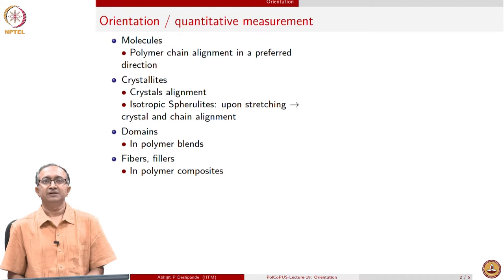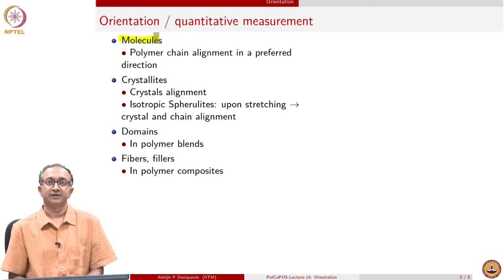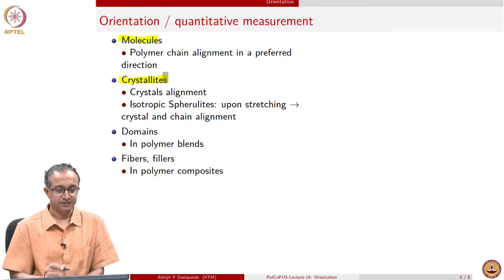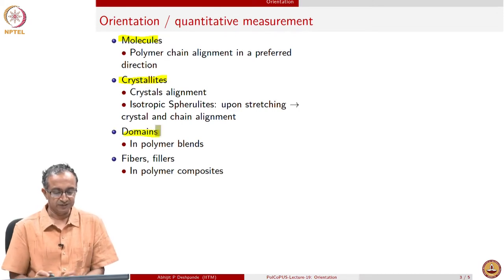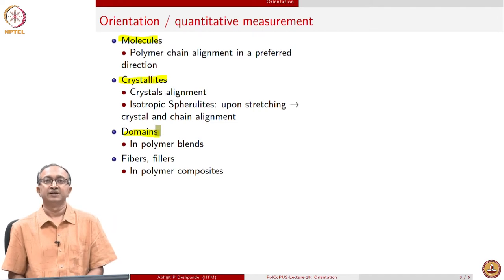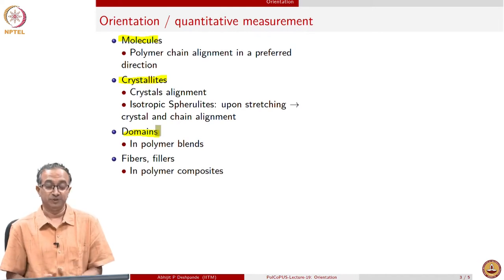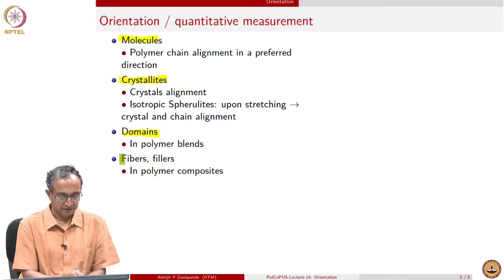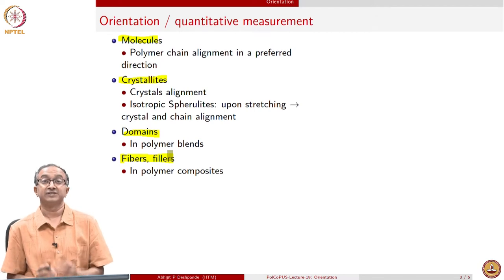Orientation can be of molecules — macromolecules in our case. It can be the orientation of crystalline segments or crystalline domains of the macromolecules. If we have a mixture of two polymers, then one polymer will be distributed in another; there will be domains of one polymer in another, and these can also be oriented. In composites, when we add short fibers or whiskers, these can also be oriented.